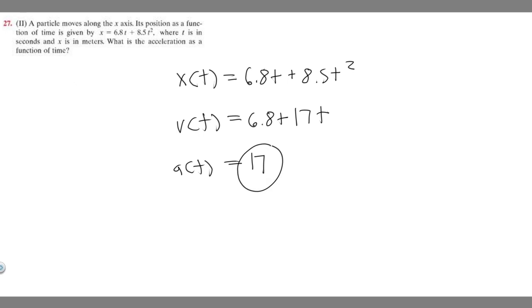We label acceleration as meters per second squared. So acceleration as a function of time is going to be 17 meters per second squared. This is your answer, and that's how you solve this problem.